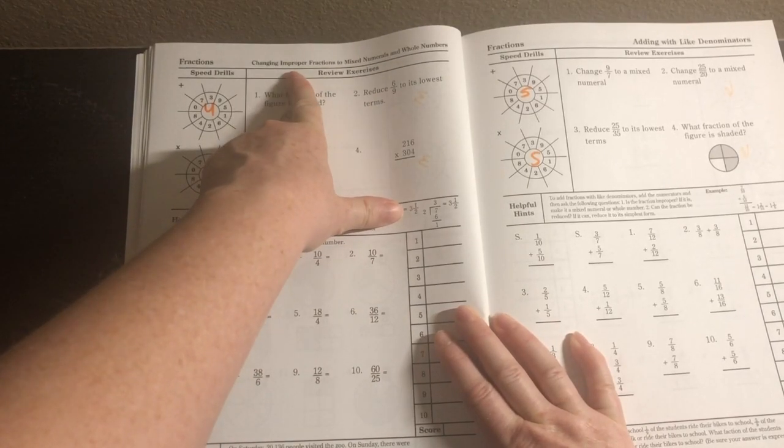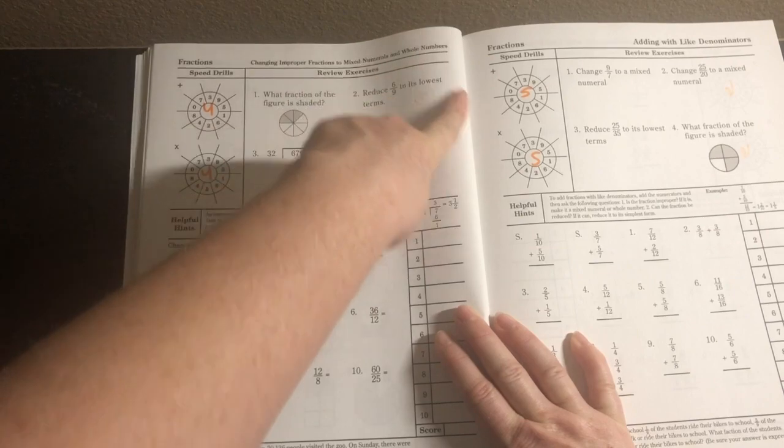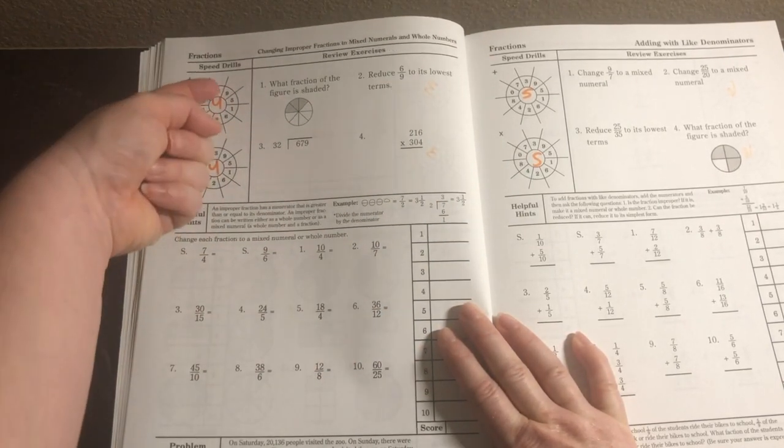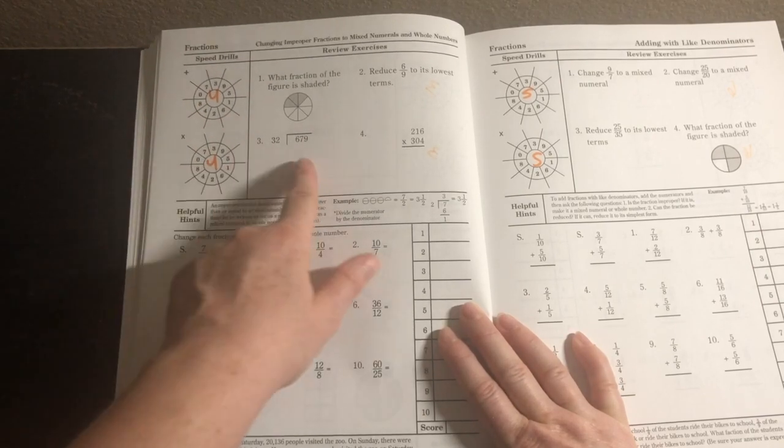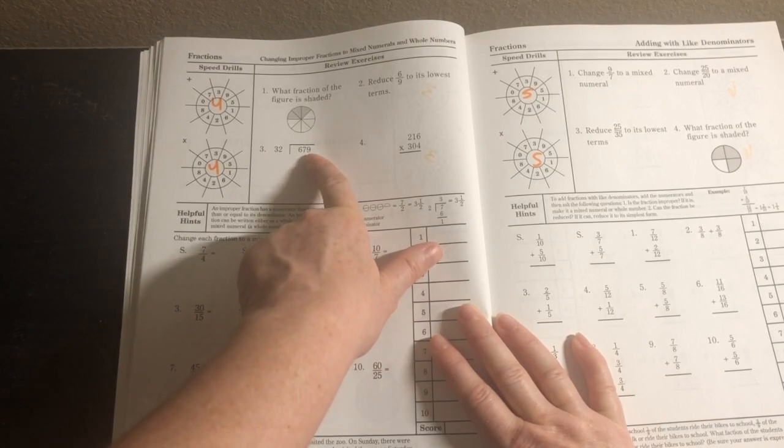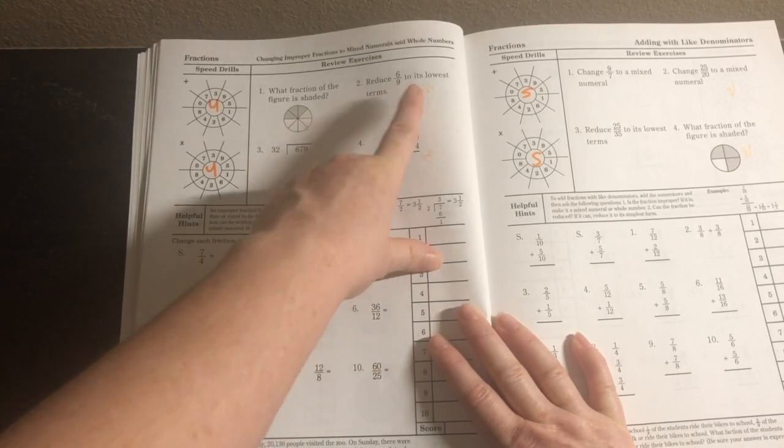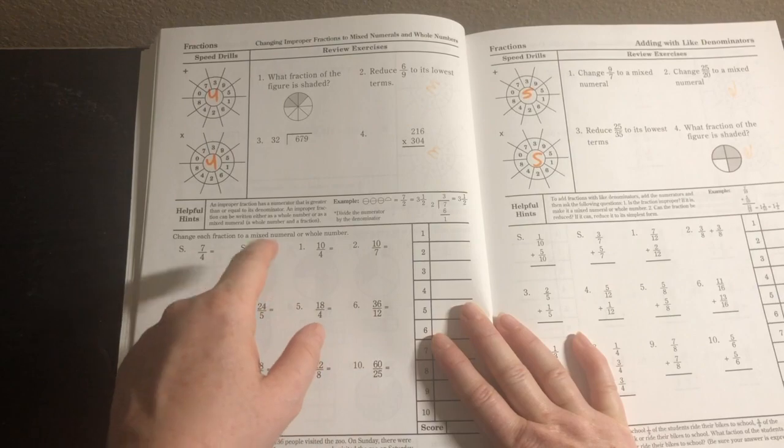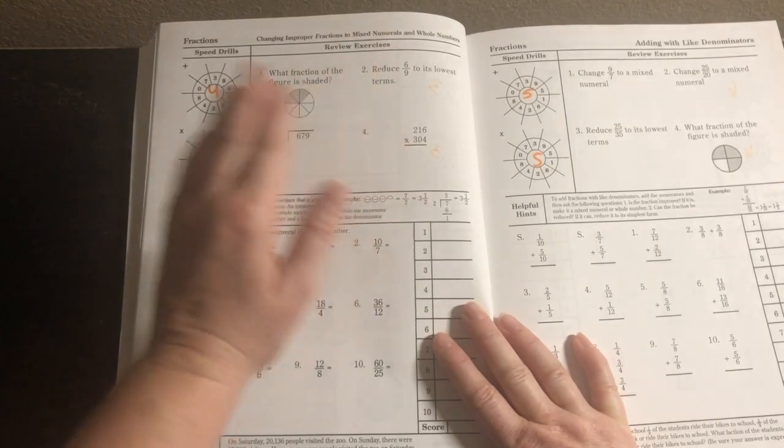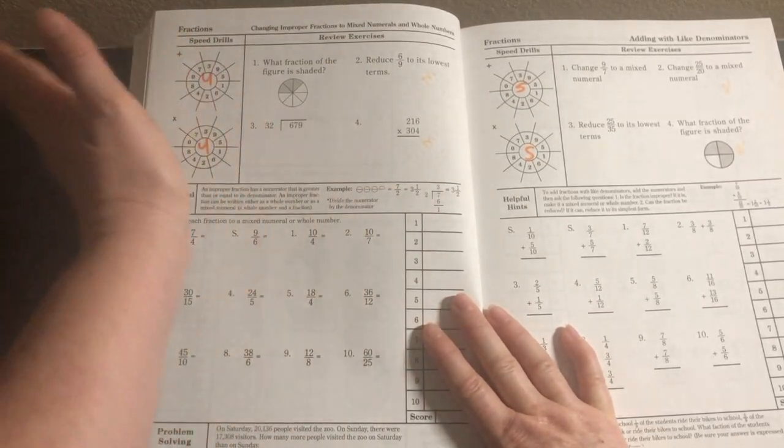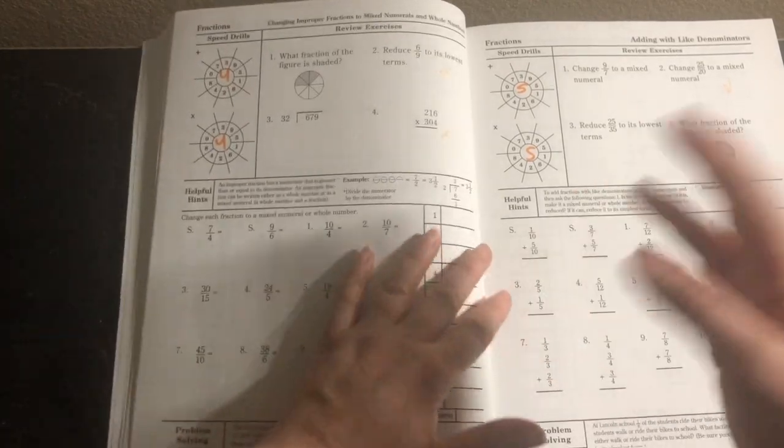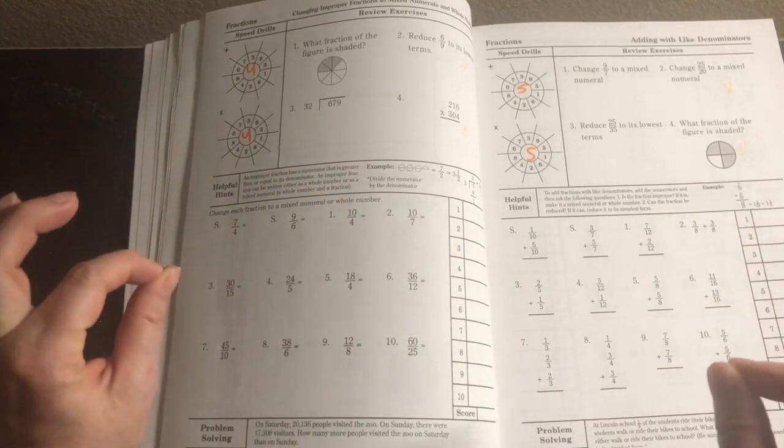At the top here it says 'Changing Improper Fractions to Mixed Numbers and Whole Numbers.' We have the speed drills and I've already written in what number she'll be adding and multiplying by. Then we have review exercises: what fraction of the figure is shaded, reduce six ninths to lowest terms, a division problem and a multiplication problem.